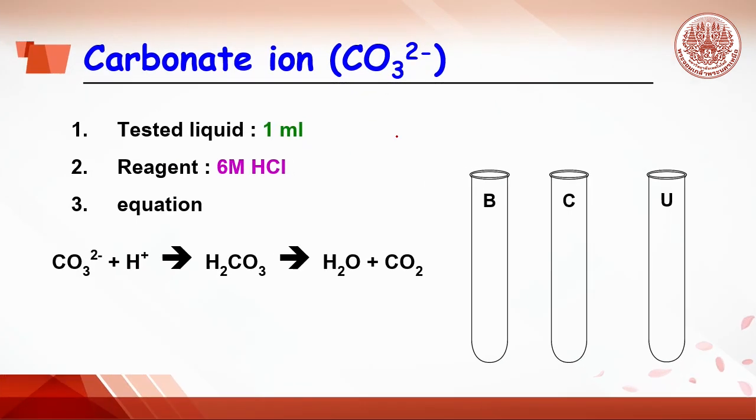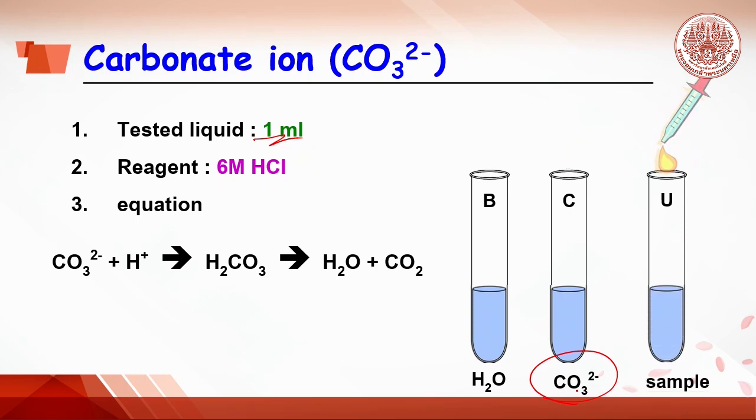For example, carbonate ion testing. 1 mL of testing liquid like water is dropped into the B tube. And 1 mL of sodium carbonate, which is carbonate ion, is dropped into the C tube. And 1 mL of unknown sample is added in the U tube.